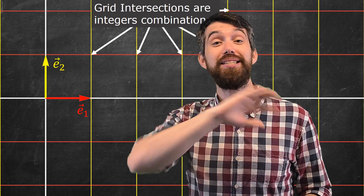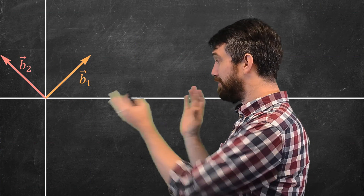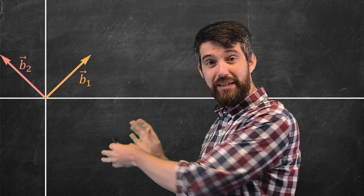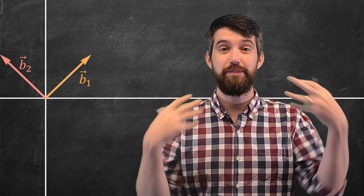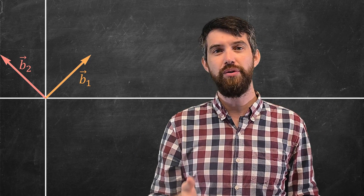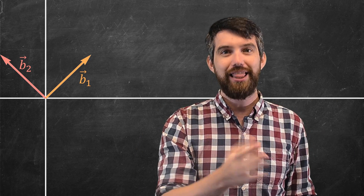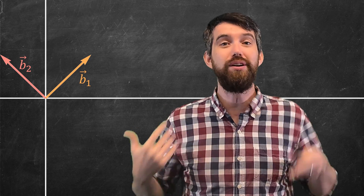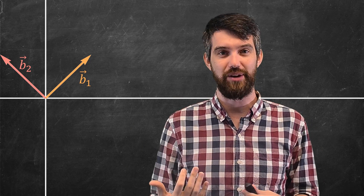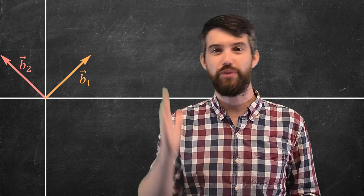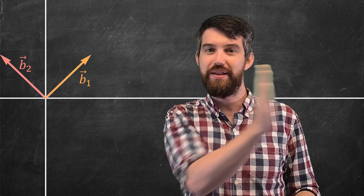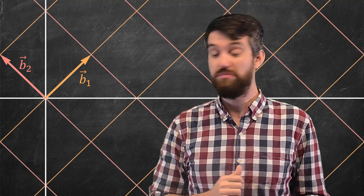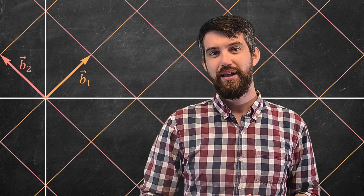Let me do a completely different basis. Now I've got a different b1 and a different b2. They're a basis — they are linearly independent and they span all of R2 — but in particular they're going to define a coordinate system, and that coordinate system is going to define a grid system, which consists of all the lines shifted by integer multiples of these basis vectors, and it looks like this.